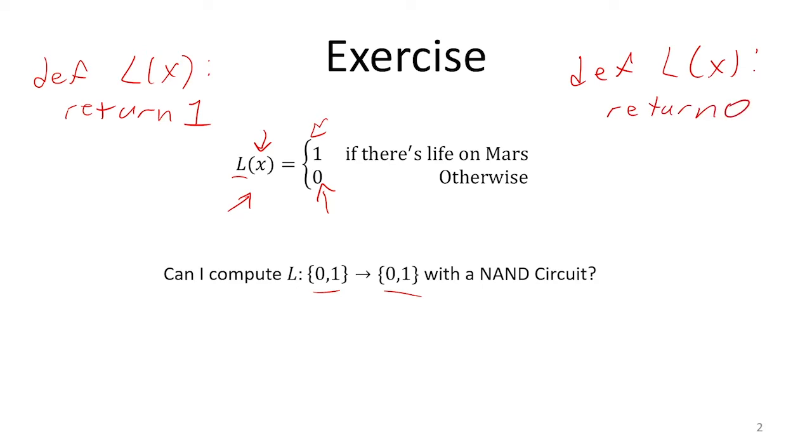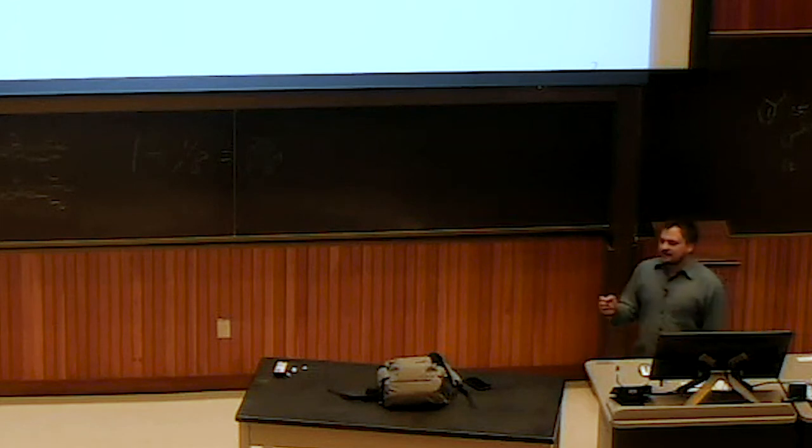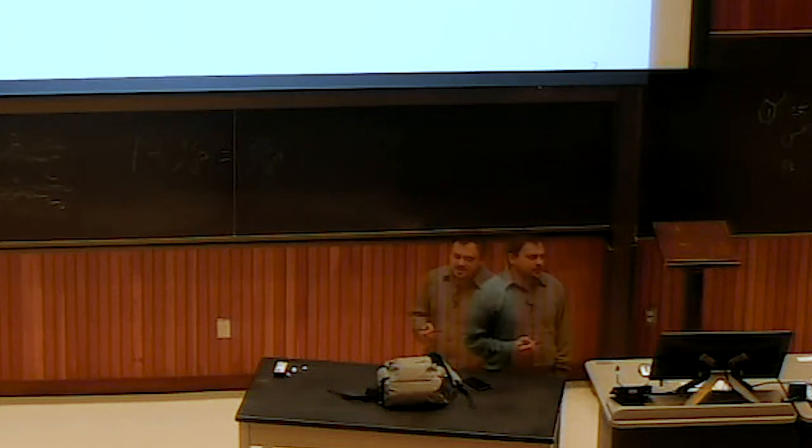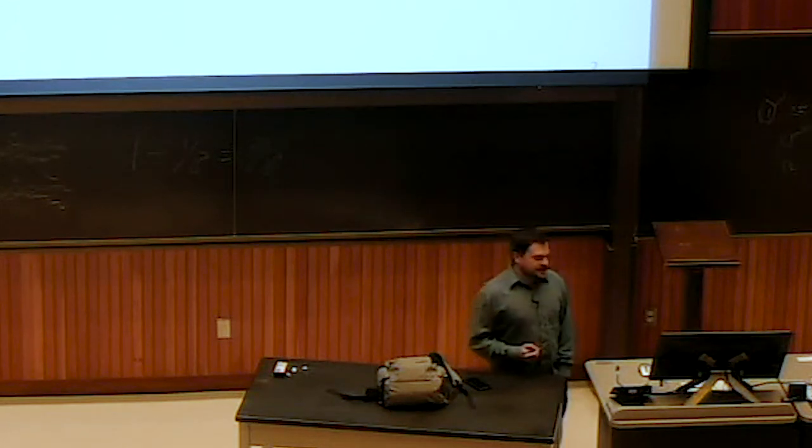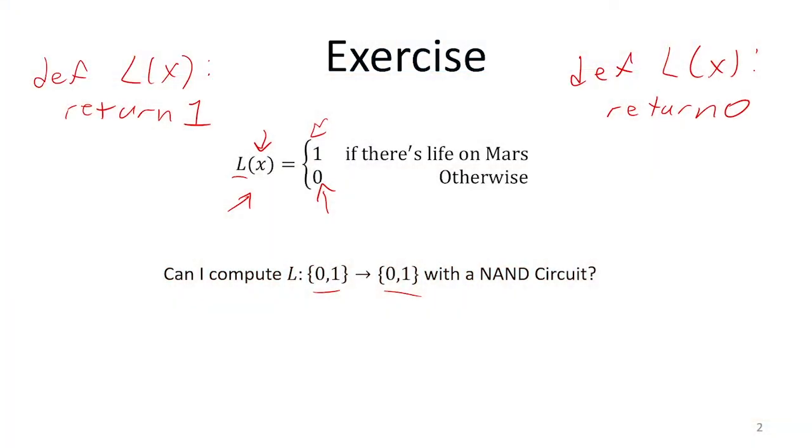So without knowing the exact identity of a function, I can still reason about whether or not I'm going to be able to implement that with a circuit. Because I knew that it was going to be either the left function or the right function. I didn't know which one it was going to be, but I knew it was going to be one or the other.